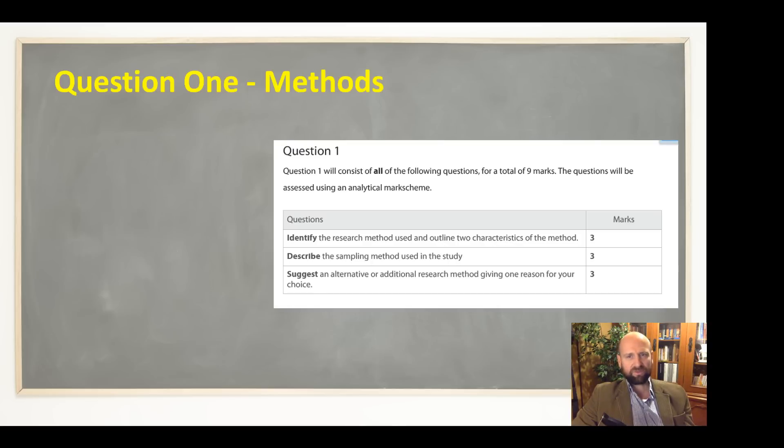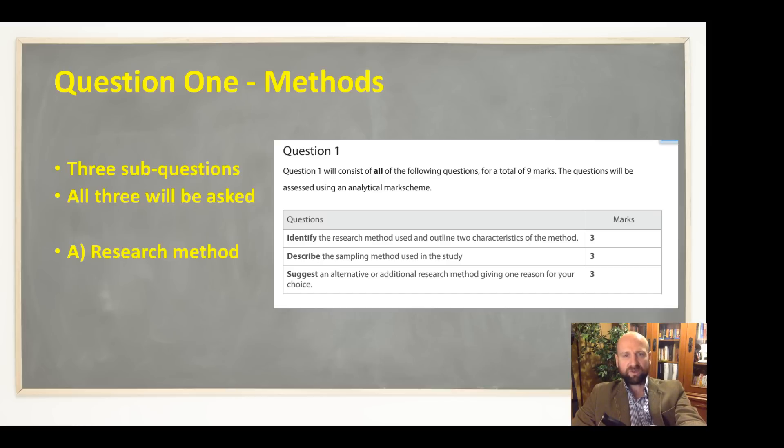If we look at Question 1, Question 1 is actually three separate questions: A, B, and C. The first one is about the research method. It's important to note all three of these questions are going to appear exactly as you see them on the screen—they're going to be your first three questions in the exam.